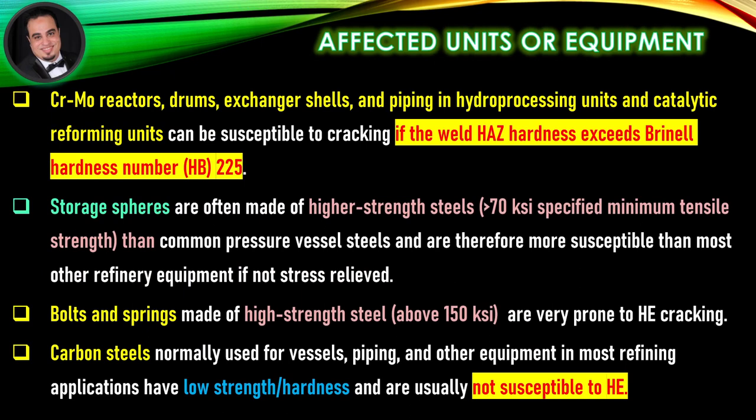Affected Units or Equipment: Chromium-molybdenum reactors, drums, exchanger shells, and piping in hydroprocessing units and catalytic reforming units can be susceptible to cracking if the weld hardness exceeds Brinell hardness number HB 225. Storage spheres are often made of higher-strength steels (more than 70 KSI specified minimum tensile strength) than common pressure vessel steels, and are therefore more susceptible than most other refinery equipment.